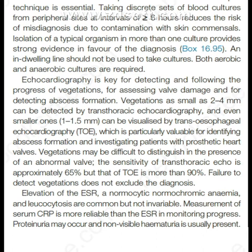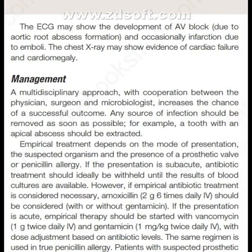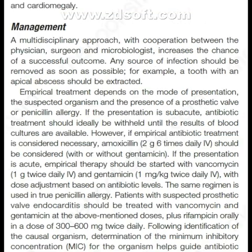Elevation of the ESR, normocytic normochromic anemia, and leukocytosis are common but not invariable. Measurement of serum CRP is more reliable than the ESR in monitoring progress. Proteinuria may occur and non-visible hematuria is usually present. The ECG may show development of AV block due to aortic root abscess formation and occasionally infarction due to emboli. The chest X-ray may show evidence of cardiac failure and cardiomegaly.